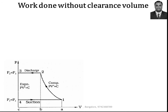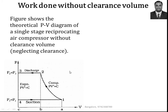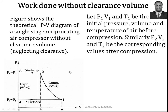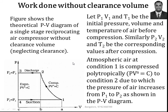Now this is the theoretical P-V diagram of a single stage reciprocating air compressor without considering the clearance volume. Let P1, V1, T1 be the initial pressure, volume, and temperature at state point 1, and P2, V2, T2 be the pressure, volume, and temperature at state point 2 after compression. The compression process 1 to 2 is considered as a polytropic process.